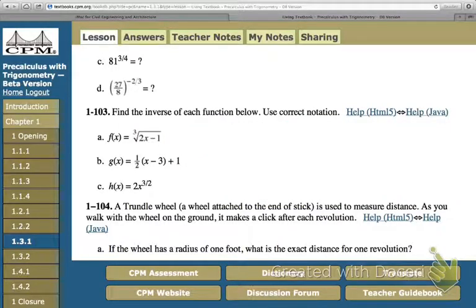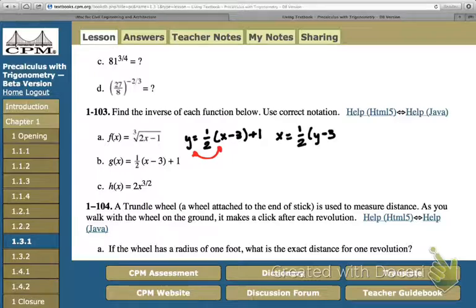So, for B, this is the one I checked. Same move at the beginning. I'm going to do it up top. We have y equals 1 half, x minus 3 plus 1. Switch the x and the y. It's going to give us x equals 1 half, y minus 3 plus 1. Alright, now the job is to isolate y.